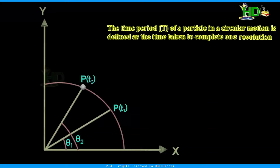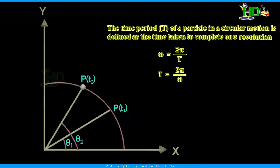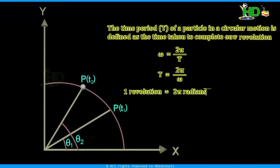The time period of a particle in circular motion is defined as the time taken to complete one revolution. Suppose the particle starts from a position — the time taken to return to that same position is the time period. When the particle completes one revolution, the angular displacement is 2π radians. Therefore, we can write angular velocity omega equal to 2π by T radians per second. One revolution is 2π radians or 360 degrees.